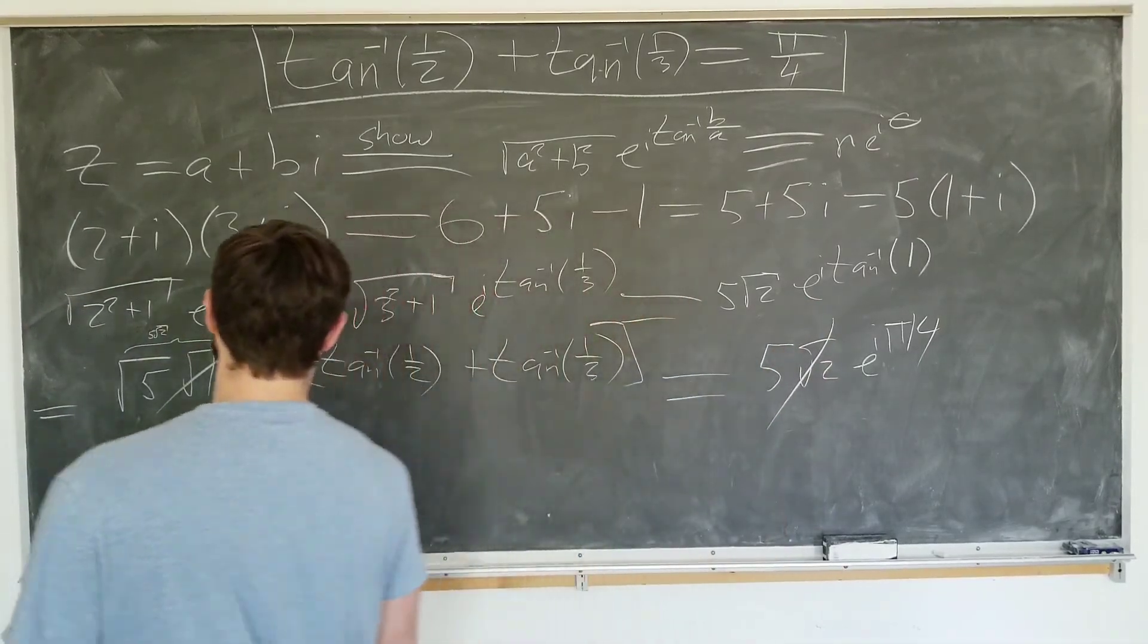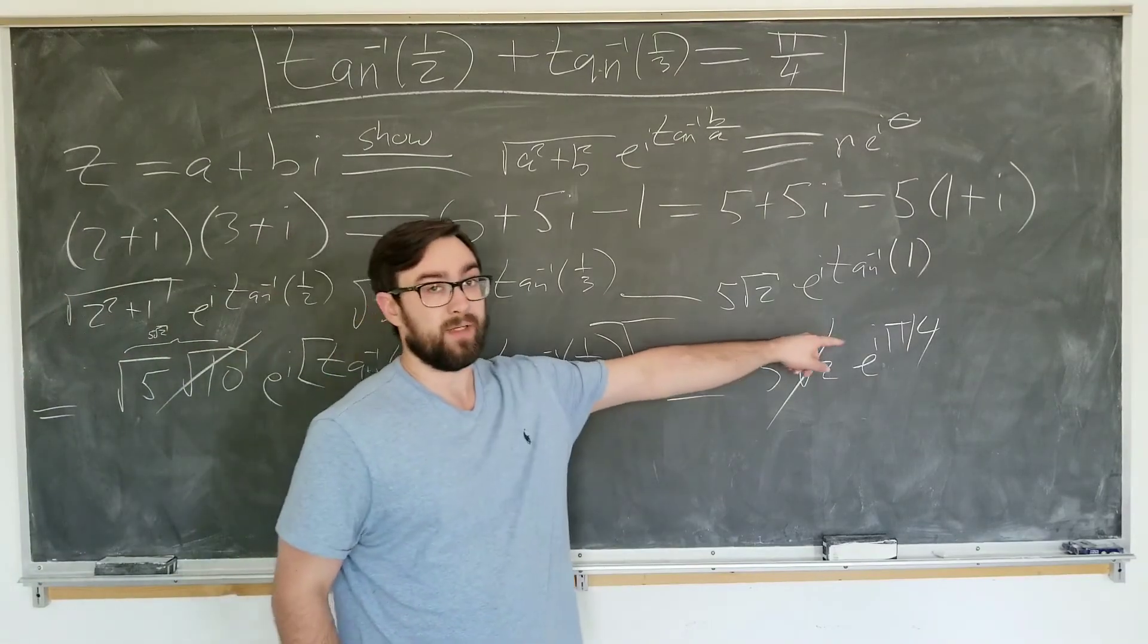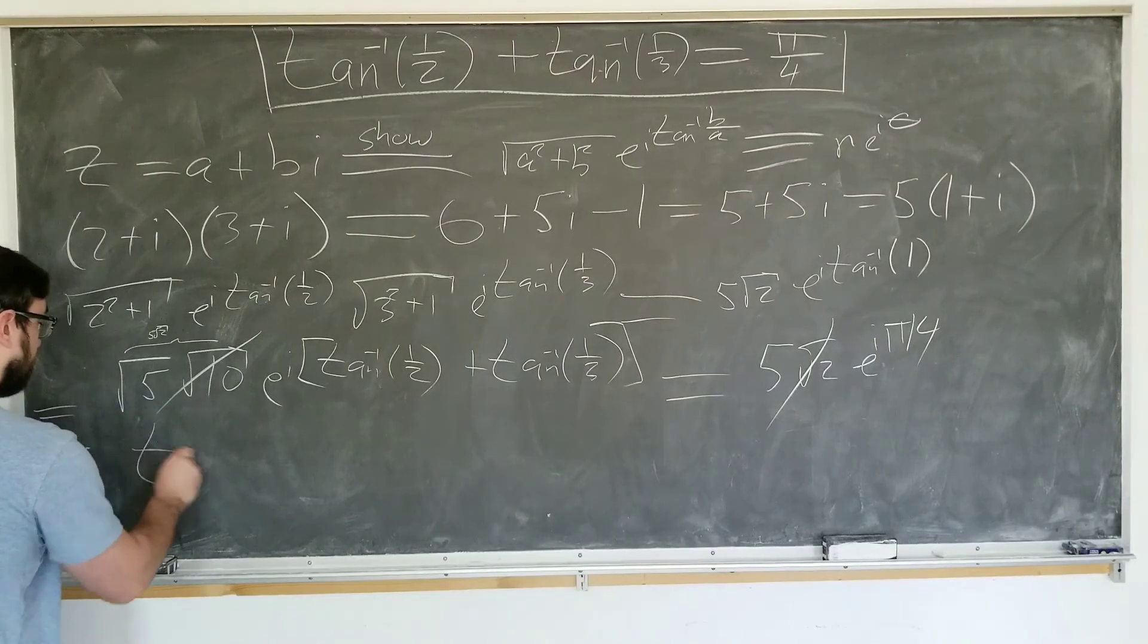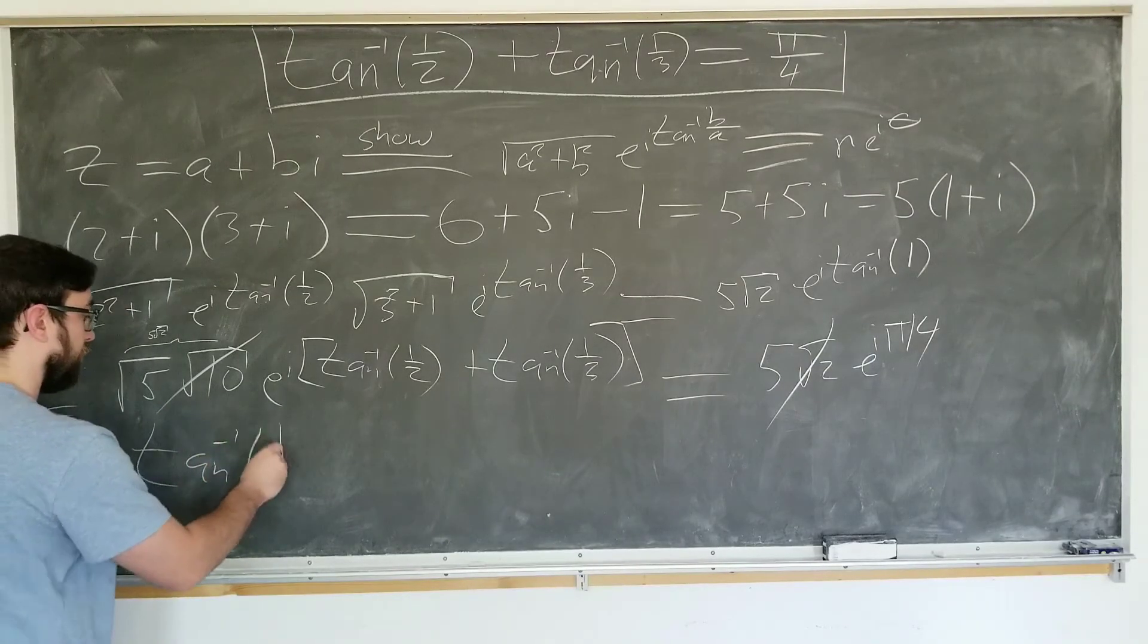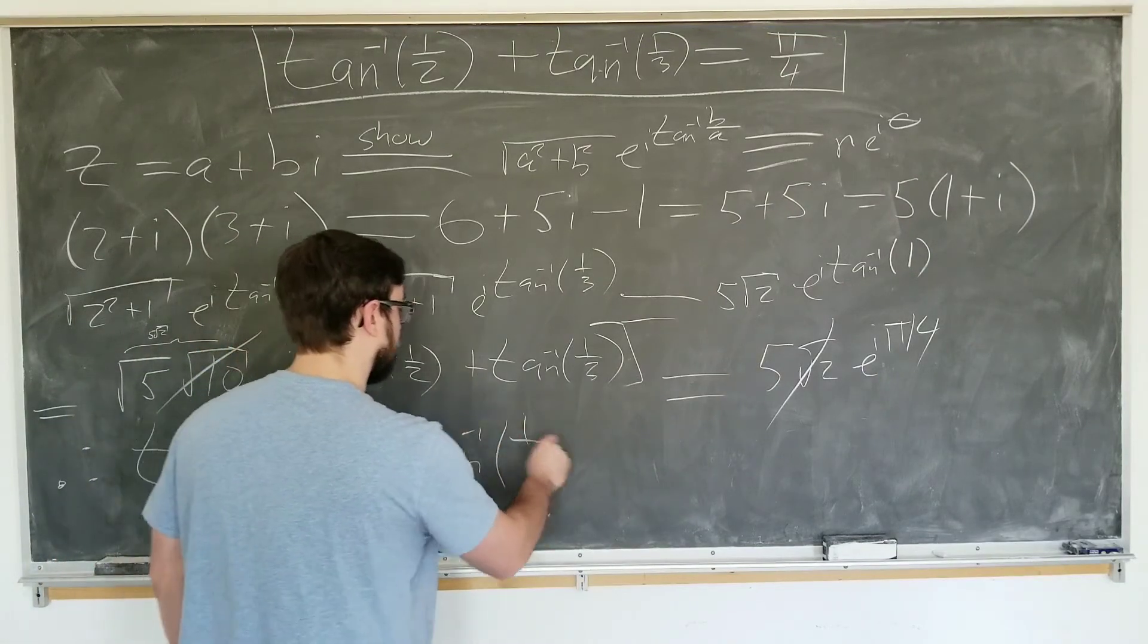And we obtain the main result. Since e to the i something equals e to the i something else, they have to be the same. This tells us that inverse tangent of one-half plus inverse tangent of one-third equals pi over 4. Very curious identity.